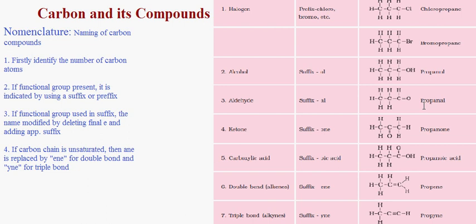Looking at the nomenclature table: Halogens are used as a prefix, like chloro-, bromo-, etc. — the compound is chloropropane. Alcohol uses the suffix '-ol', giving propanol for three carbon atoms. Aldehyde (-CHO) gives propanal. Ketone (-CO) gives propanone. Carboxylic acid uses a suffix, giving propanoic acid for three carbon atoms. Double bond uses the suffix '-ene', giving propene. Triple bond uses the suffix '-yne', giving propyne.